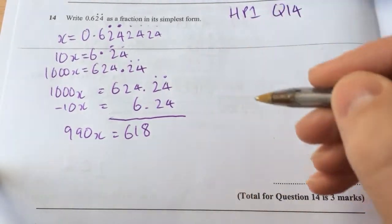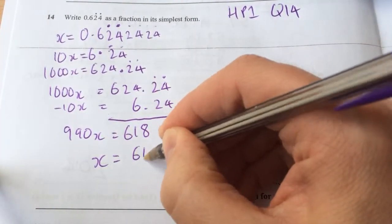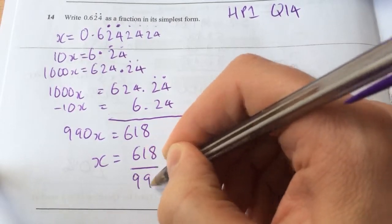And as I say, the decimal places are falling away. So x will equal 618 over 990.